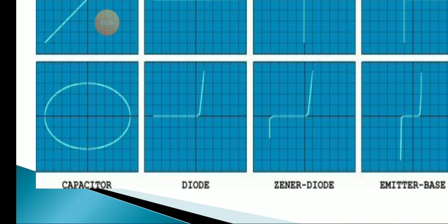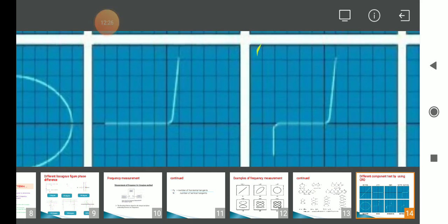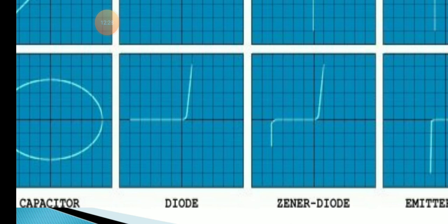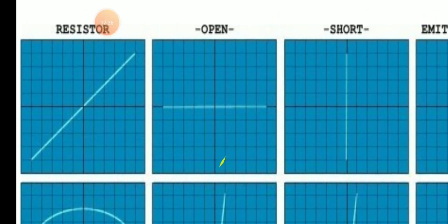For resistor testing, the CRO will show an inclined straight line depending on the resistance value. Depending on the resistance value, it will show one straight line which may be open or short. The pattern varies with the resistance value and you can observe different patterns accordingly.